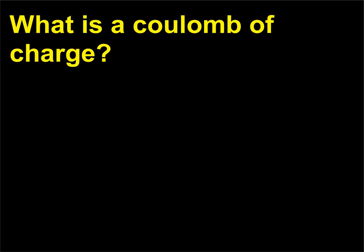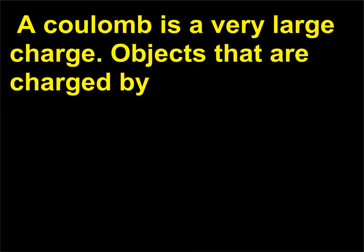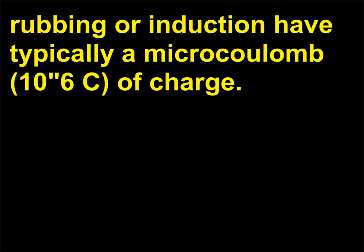What is a coulomb of charge? A coulomb of charge is equal to the charge of 6.24 × 10^18 electrons (negative) or protons (positive). A coulomb is a very large charge. Objects that are charged by rubbing or induction have typically a microcoulomb (10^-6 C) of charge.